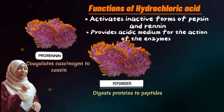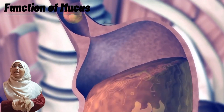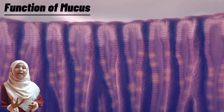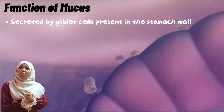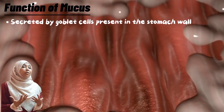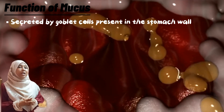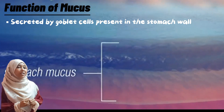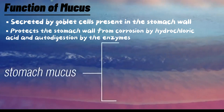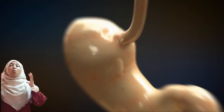We also have mucus in our stomach. The mucus coats the stomach walls in a thick layer and is secreted by specialized cells called goblet cells. The functions of mucus are: first, it protects the stomach walls from the corrosion of hydrochloric acid, which is a very strong acid that can eat away at the stomach wall. Second, it protects the stomach wall from auto-digestion by the protein-digesting enzymes pepsin and rennin.